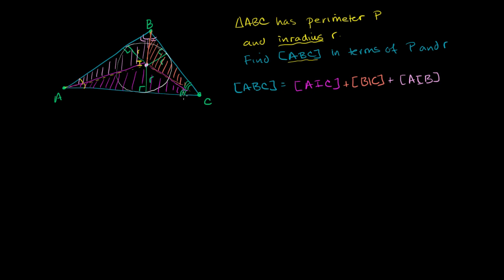The area of AIC equals one-half base times height, which is one-half times AC times R. The area of BIC is one-half times BC times R. And the area of AIB is one-half times AB times R. We can factor out one-half R from all of these terms.